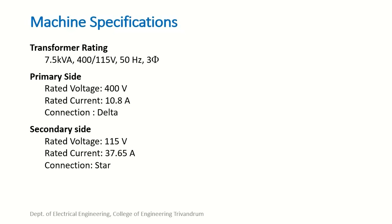These are the machine specifications. The transformer rating is 7.5 kVA, 400/115 volt, 50 hertz, three-phase transformer. The primary side ratings are: rated voltage is 400 volt, rated current is 10.8 amperes, and the windings are delta connected. The secondary side ratings are: rated voltage is 115 volt, rated current is 37.65 amperes, and the windings are star connected.